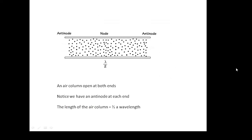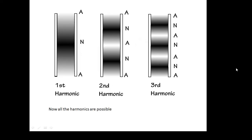This tube is open at both ends. Following the rules from before, that means both ends have to be an antinode, and we have a node in the middle. So the fundamental frequency and the wavelength of the fundamental are going to be very different. An air column open at both ends has an antinode at each end and a node in the middle, and the length of the air column is half a wavelength this time — not a quarter of a wavelength, half a wavelength. We're going to get different harmonics this time. We can get the second harmonic, because it would be antinode at both open ends, and that's allowed. We get the third harmonic, so this time we get all of the harmonics — first, second, third, fourth, fifth, etc.